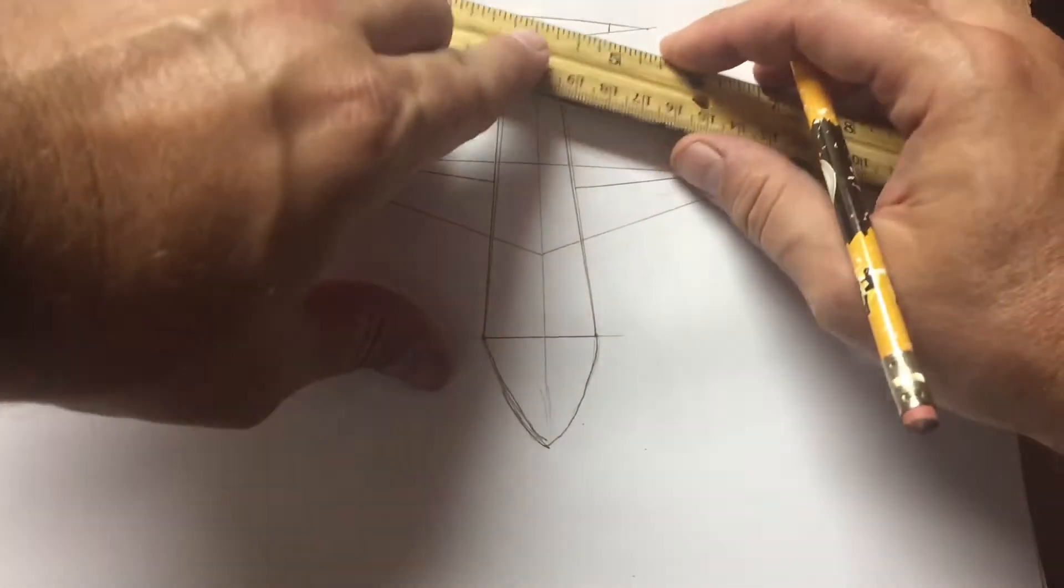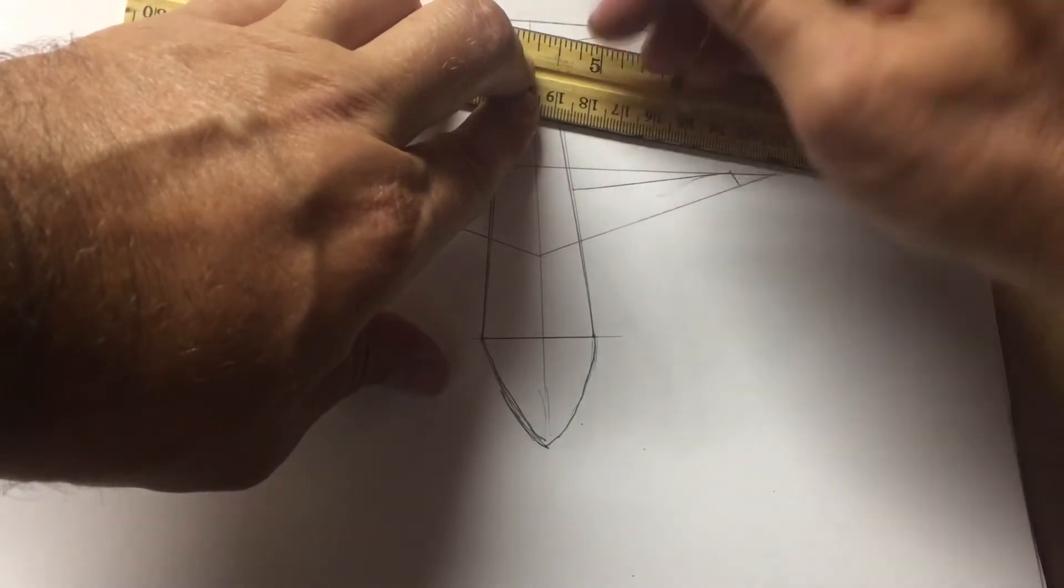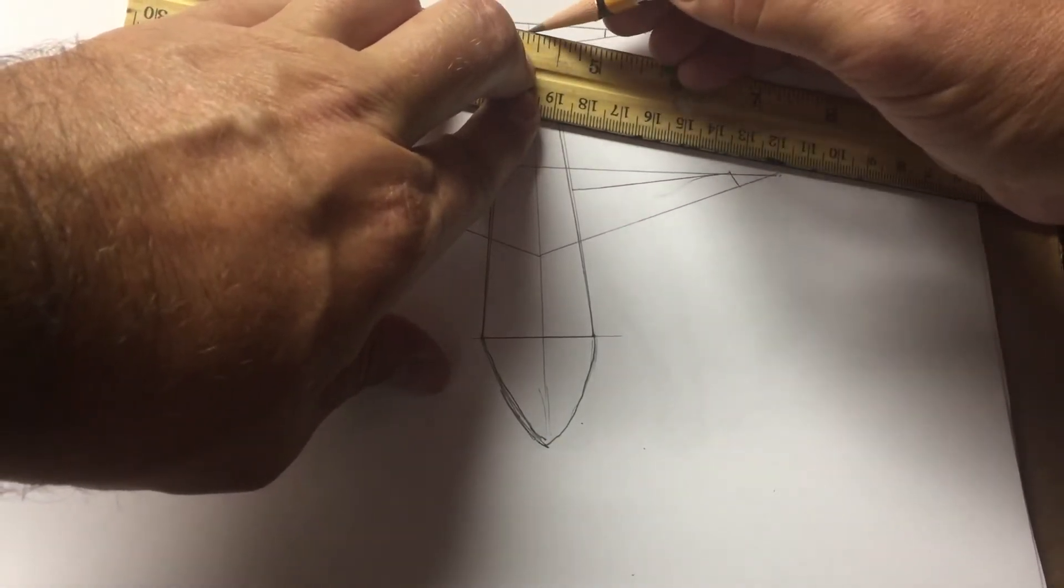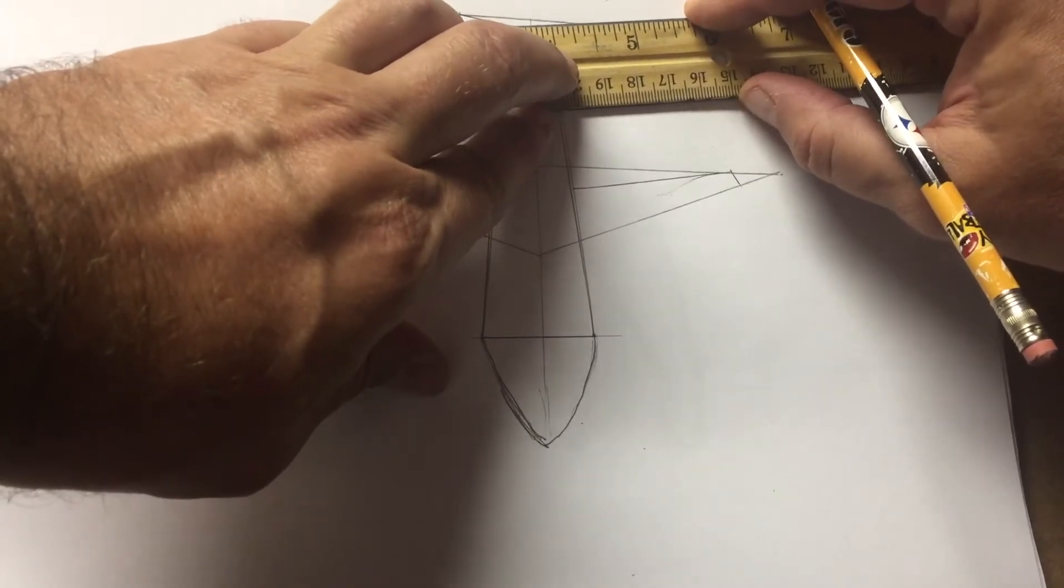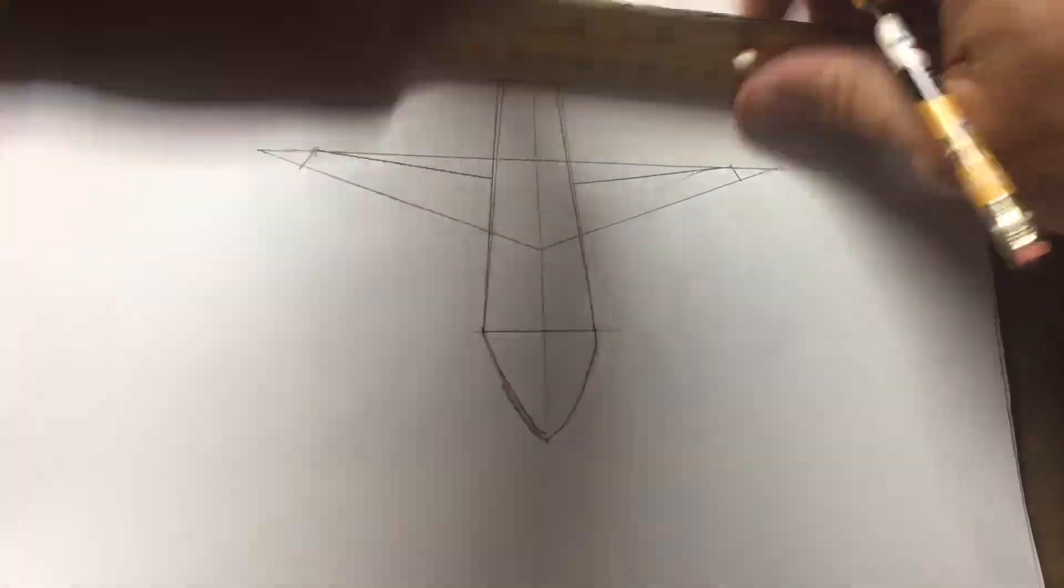And also on the tail, from about here. And on the other side, line them up, draw them in.